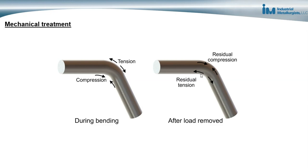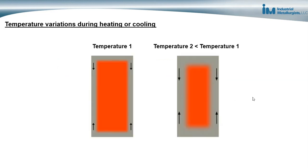With temperature variations during cooling, the outer portion of the metal cools first, contracts, and establishes its shape in the cooled condition. Then as more material starts to cool, it also tries to contract.